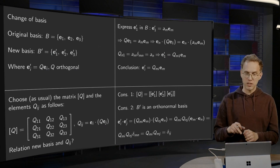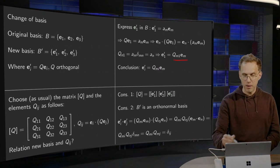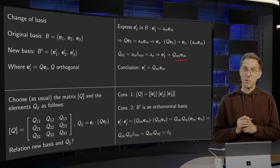So what's the consequence? Well, from this formula, E1' = QM1*EM, you have Q11, Q21, Q31 are the components of E1' in the old basis.